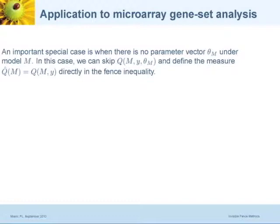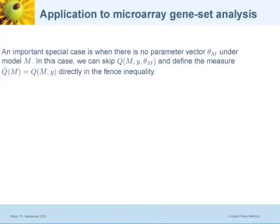Now I'd like to apply this method to the microarray gene set analysis problem discussed earlier. We have this measure of lack of fit. The first question to answer is: how do you connect model selection with gene set identification? Where is the model? And what is the measure of lack of fit here? Before answering that, let me point out one special case: when there is no parameter involved under the assumed model.